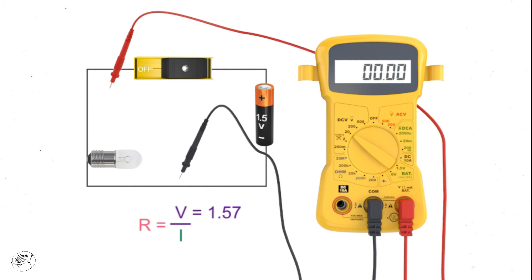Now let's determine the resistance of the bulb in the circuit using the ohms equations. If the current in the circuit is 0.3 amps, and the voltage across the battery is 1.57, then the resistance of the light bulb would be 1.57 divided by 0.3 or 5.23 ohms.